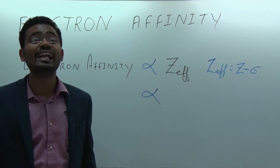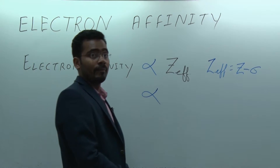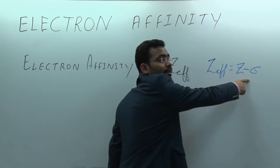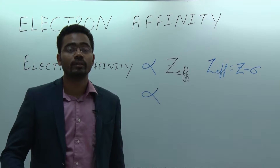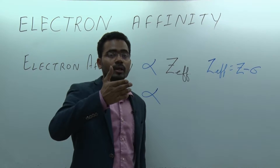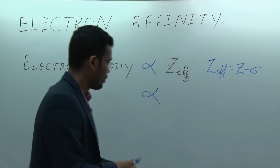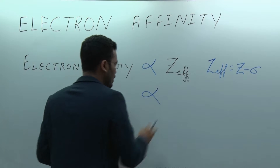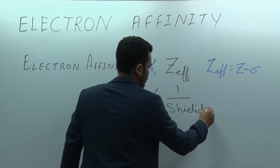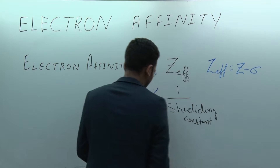Since Z effective equals Z minus sigma, electron affinity is directly proportional to Z effective, but with the minus sign it is inversely proportional to sigma, the shielding constant. If electrons shield the nuclear charge, therefore electron affinity will decrease. So electron affinity is inversely proportional to the shielding constant sigma.